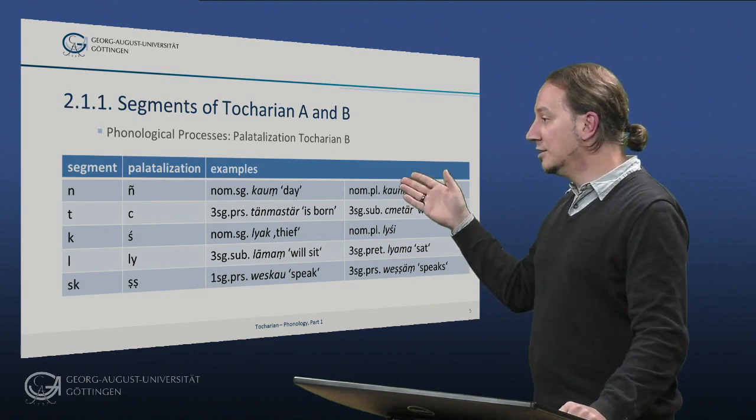So we have N to N, which contrasts KAUN, day and KAUNI, days. Or we have T to CH, which contrasts third singular present TÜNMASTER, from third singular subjunctive CHMETR, will be born. We have K to SH, nominative singular LIAK, thief, nominative plural LUSHI. We have L to LIH, contrasting third singular subjunctive LAMAN, will sit, from third singular preterite LIAMA, sat. And we have SK to SH, contrasting third singular present WESKAU, speak, from third singular present WESCHUN, speaks.